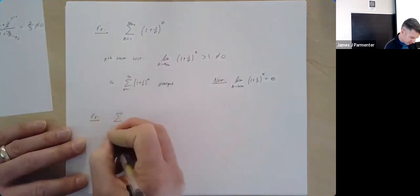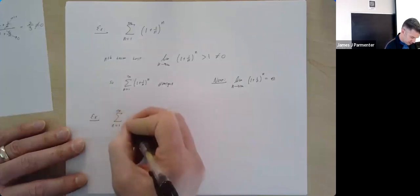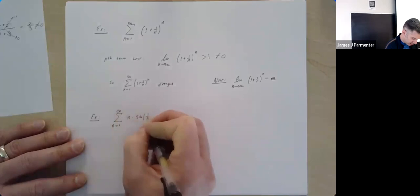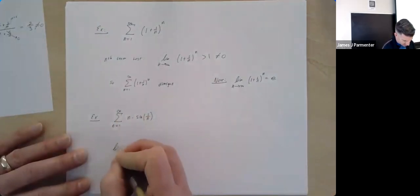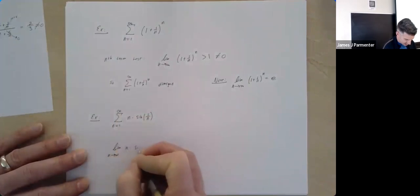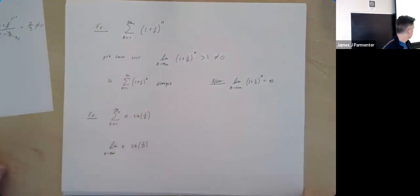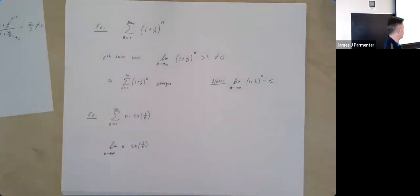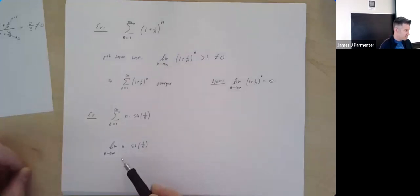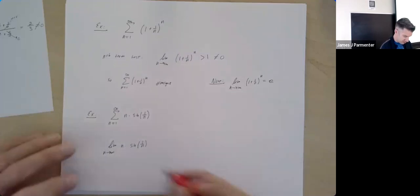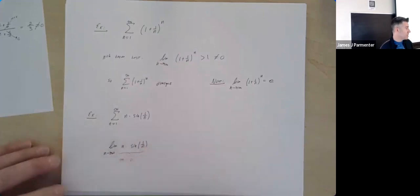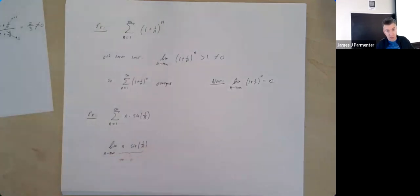One more classic example: the series from N equals 1 to infinity of N·sin(1/N). Looking at the limit as N goes to infinity of N·sin(1/N): if you try plugging in infinity, 1/N goes to 0, and sine of 0 is 0, so you get infinity times 0. This is what's often called an infinity times 0 indeterminate form — just like infinity/infinity or 0/0, we need more work because it's really a very big number times a very small number.